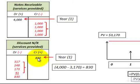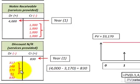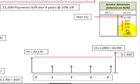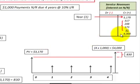That $830 is the interest we had to allocate. We credit our discount, increasing it by $830, and then for each year we reduce that discount by the interest earned on the notes receivable. The balancing entries for year one record the present value of the notes receivable at $3,170, and then we include the interest revenues earned over the period of the notes receivable, totaling $4,000.